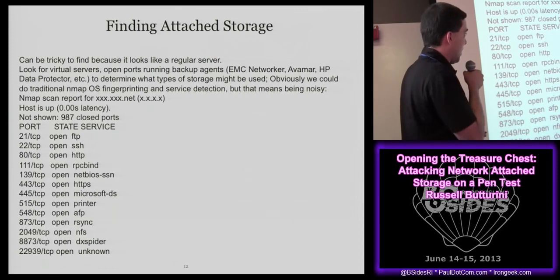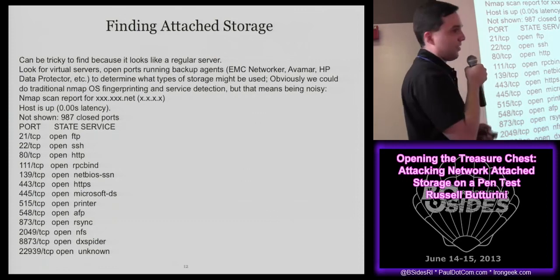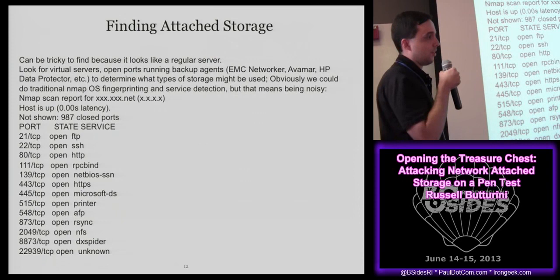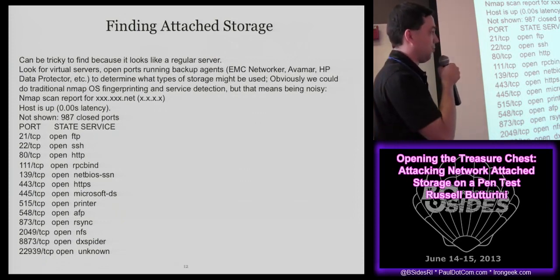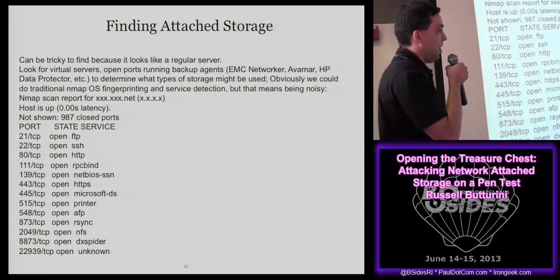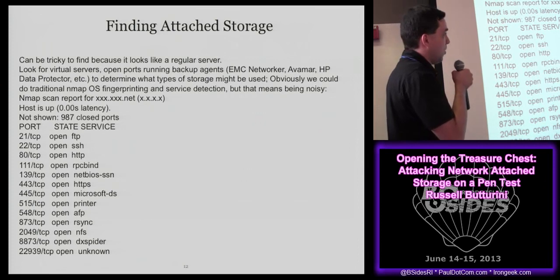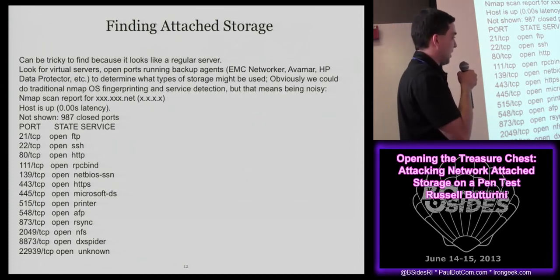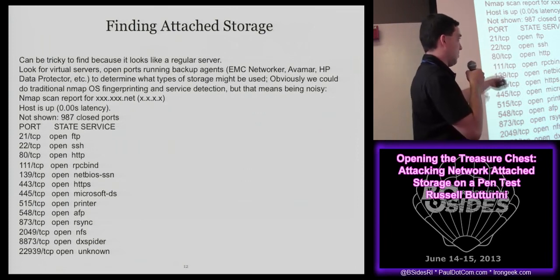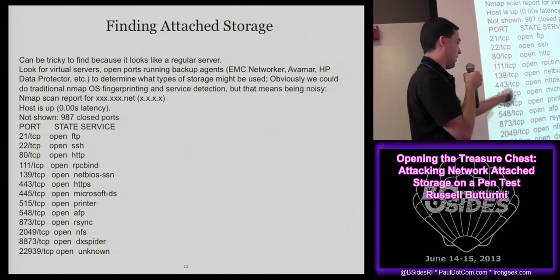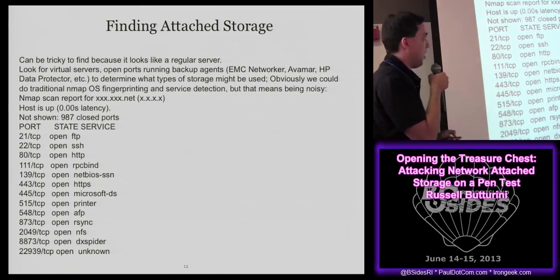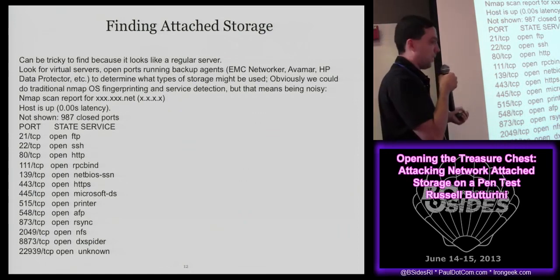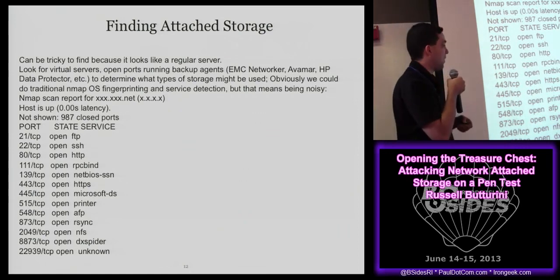Finding network attached storage on the network can be a little tricky. You can do OS detection with nmap and service versioning, but if you don't have that and you just look at the raw output, it doesn't look like much of anything. It looks like maybe a Linux server with a bunch of stuff on it - there's SSH, FTP, probably some kind of Apache web server running, SSL, and that kind of thing. Depending on what local access you have, how do you find this stuff on the network?